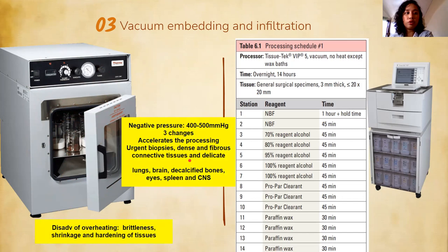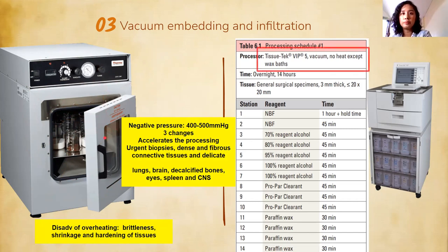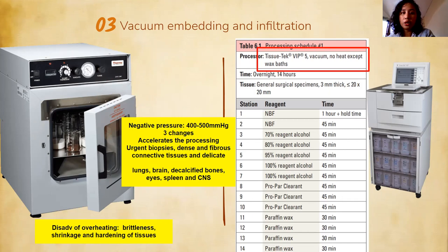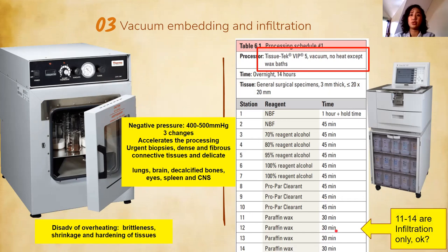The disadvantage of vacuum infiltration with heat is it could make the tissue brittle, cause shrinkage, and harden the tissue. For the tissue tech machine with vacuum but no heat except to melt the paraffin wax, there are four changes for 30 minutes each — this is only infiltration. The vacuum facilitates the entry of the infiltrating medium.